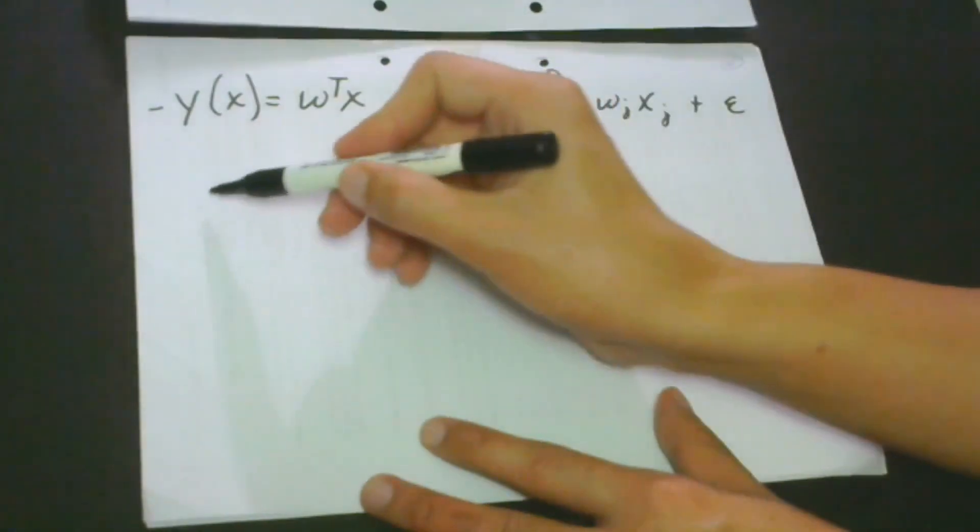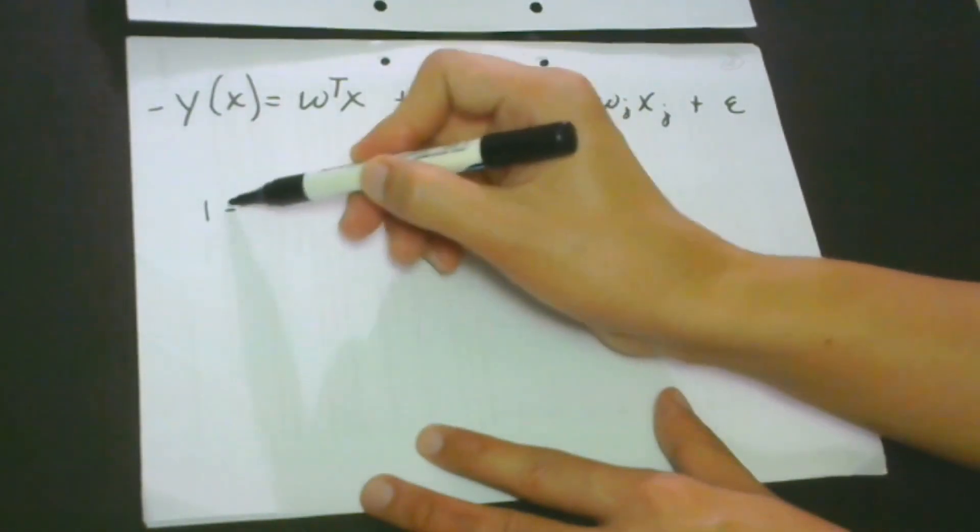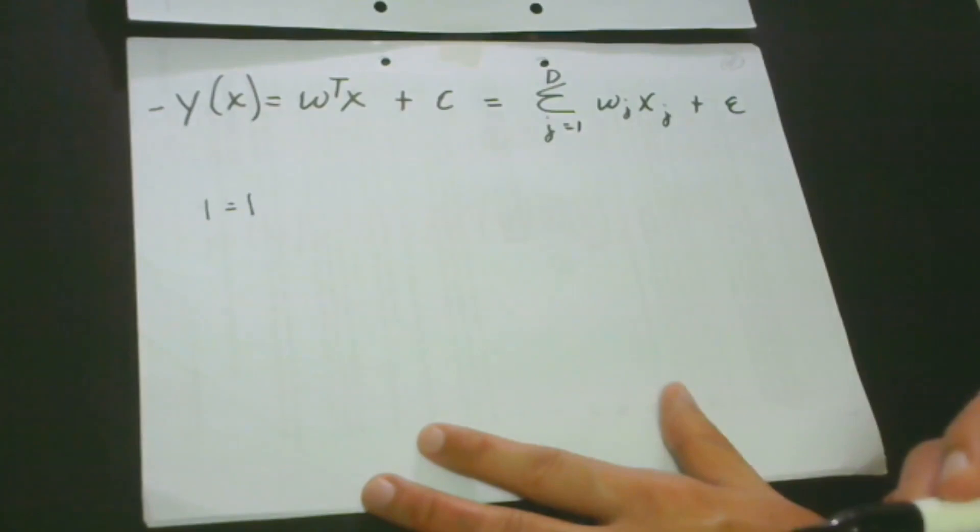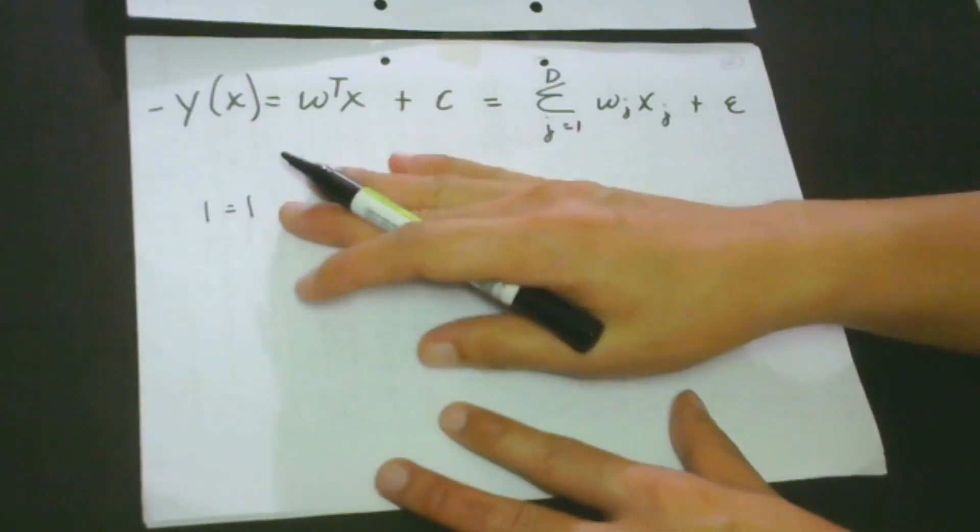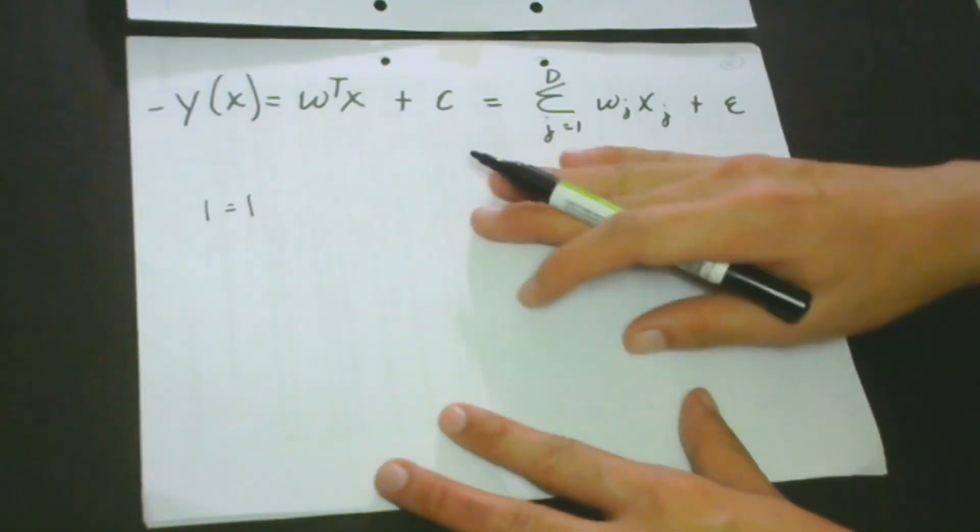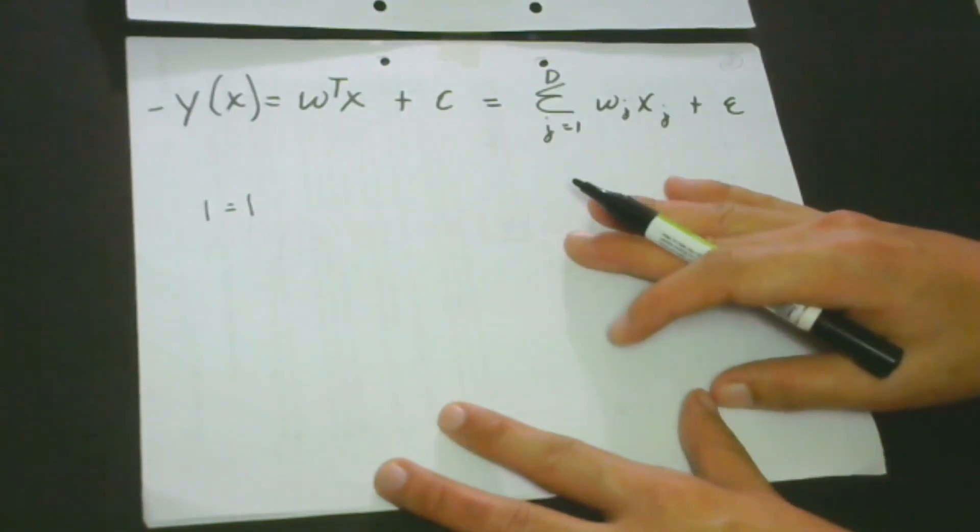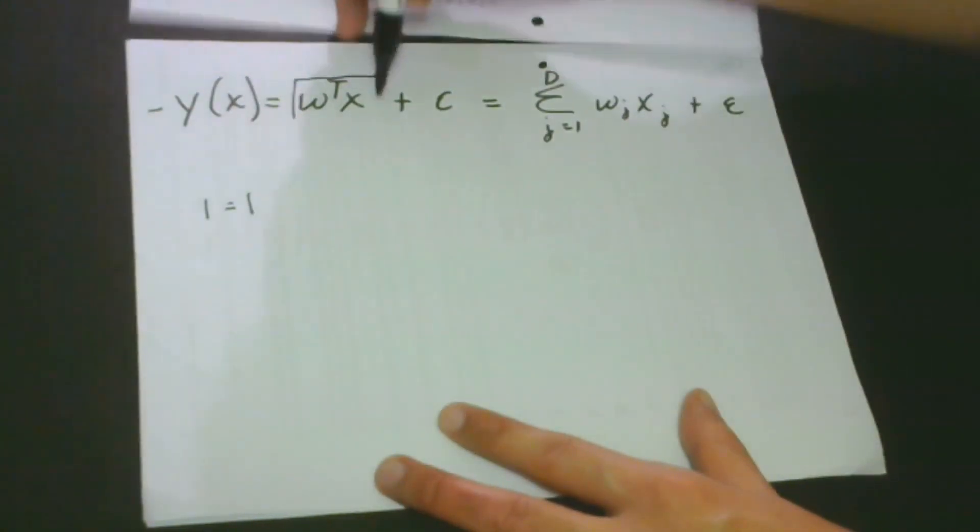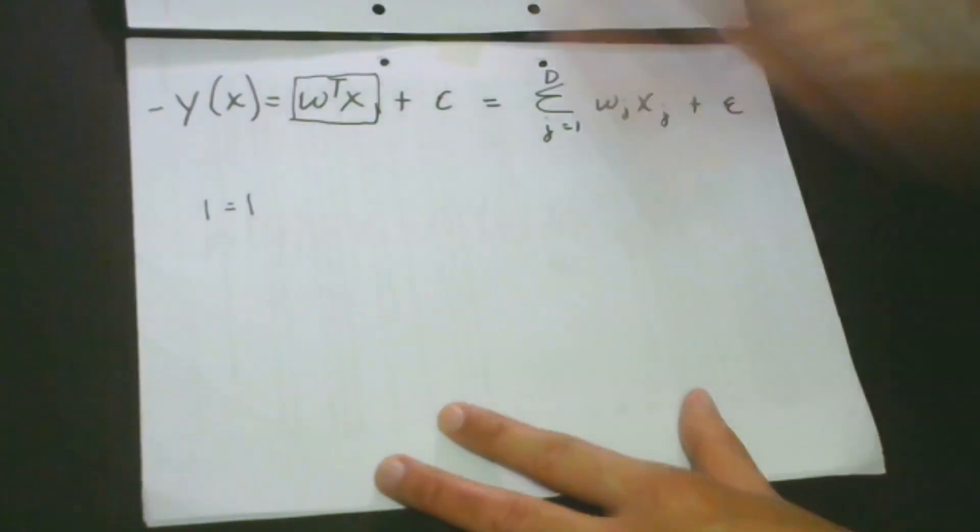That means for every input, there is always an equivalent one output. So we will have the different parts of this equation one by one. So let's start with this one first. This is W^T X.